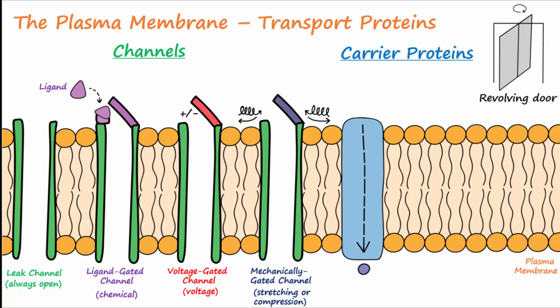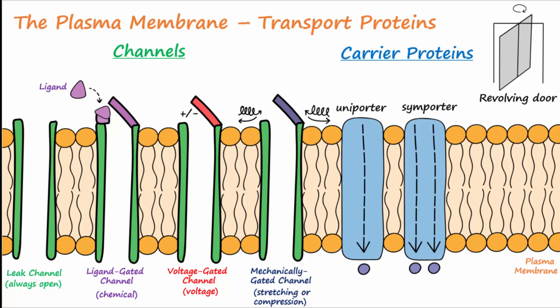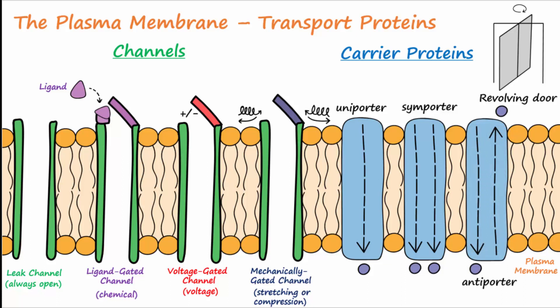Important examples of carrier proteins are uniporters, symporters, antiporters, and ATP-powered pumps.